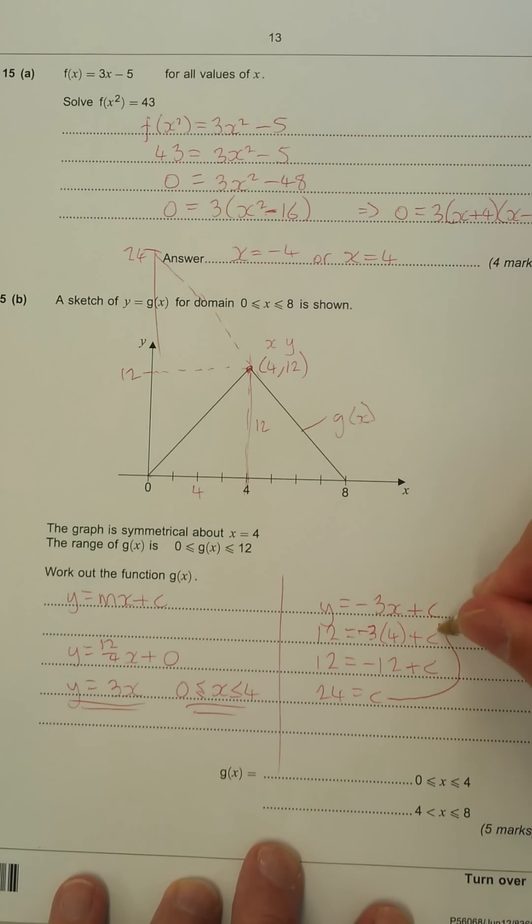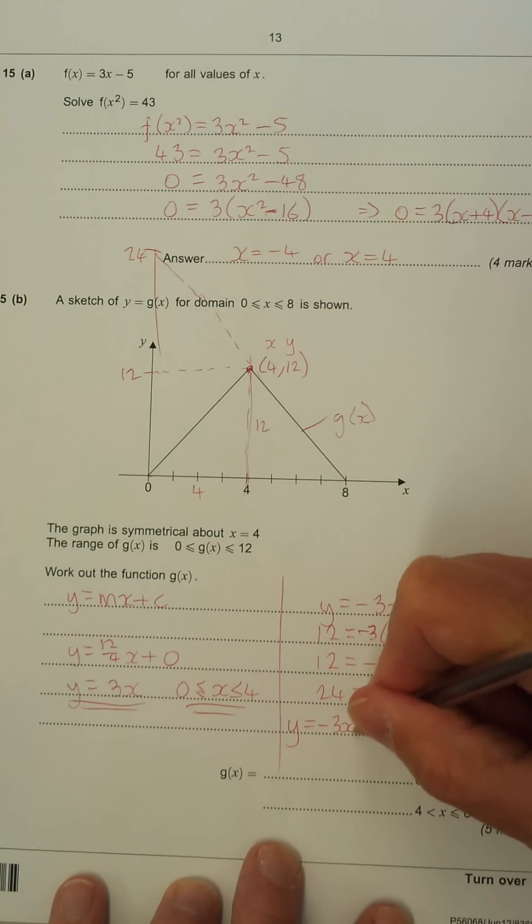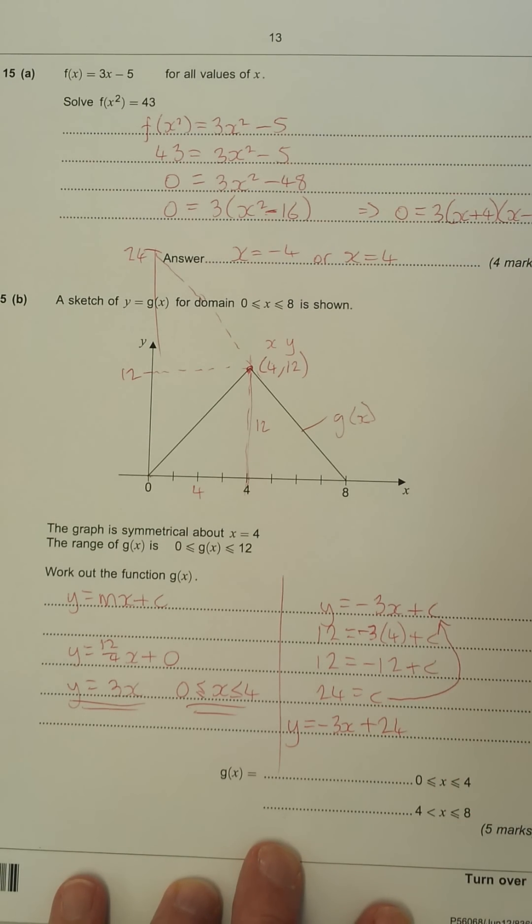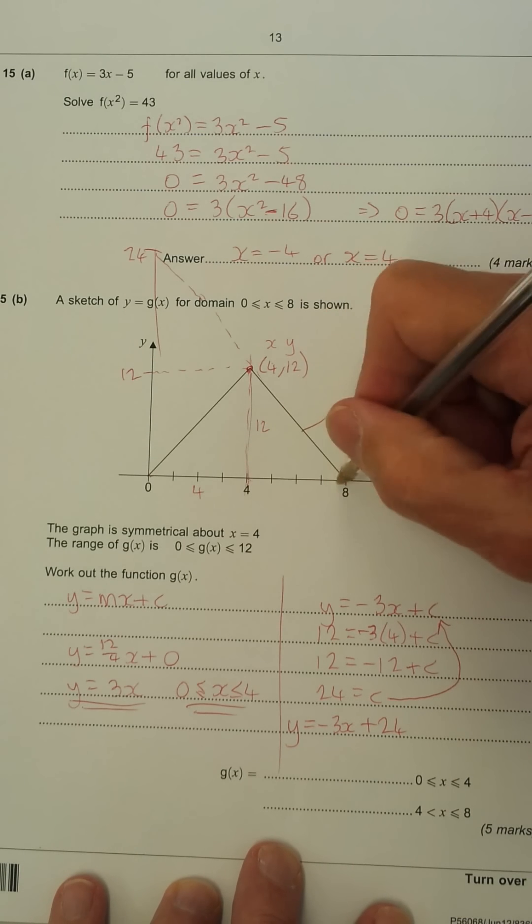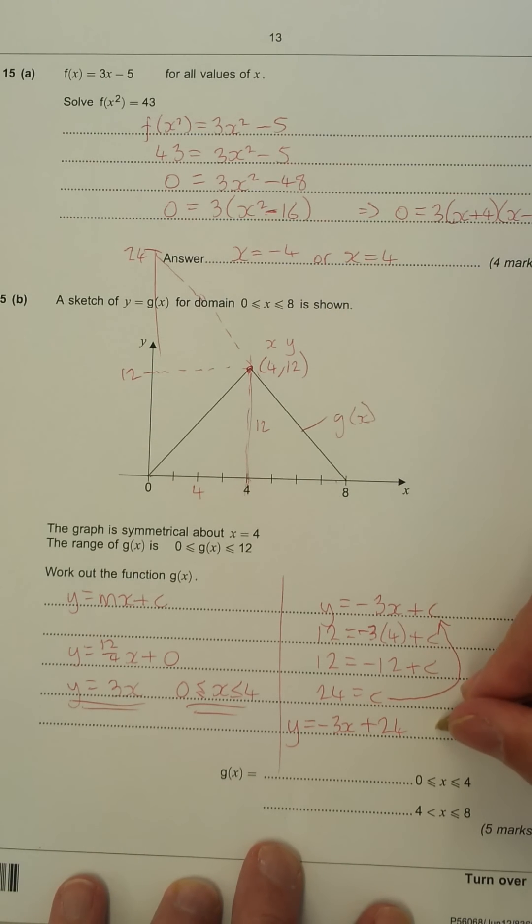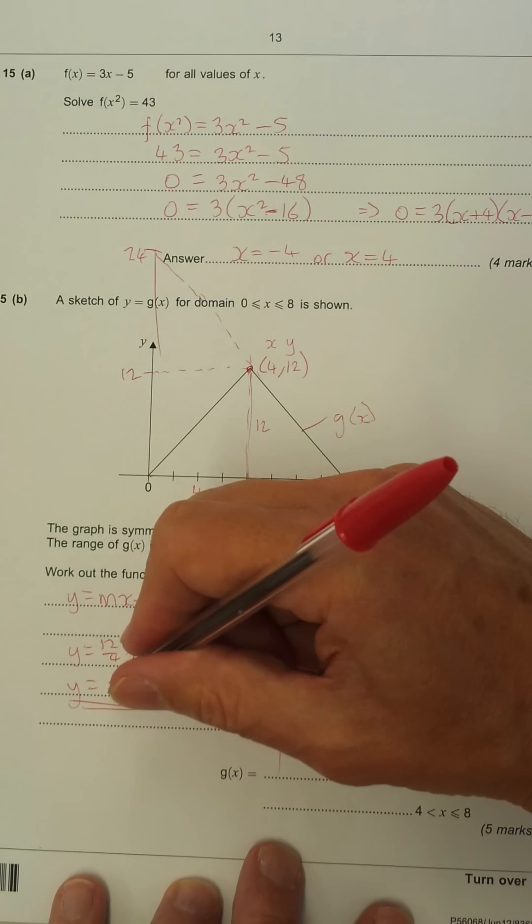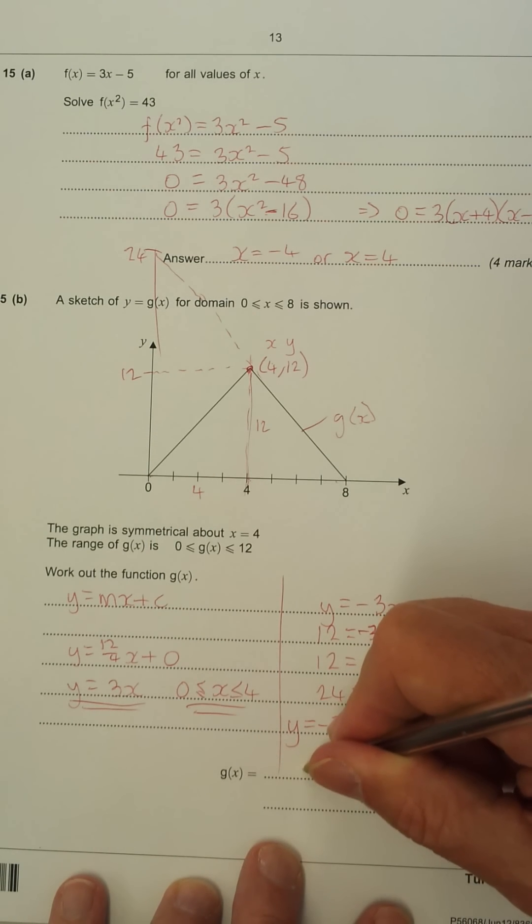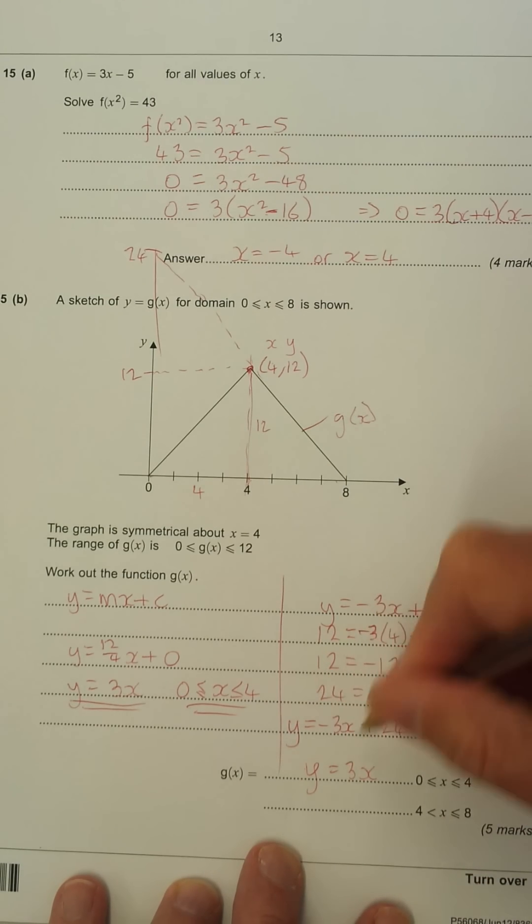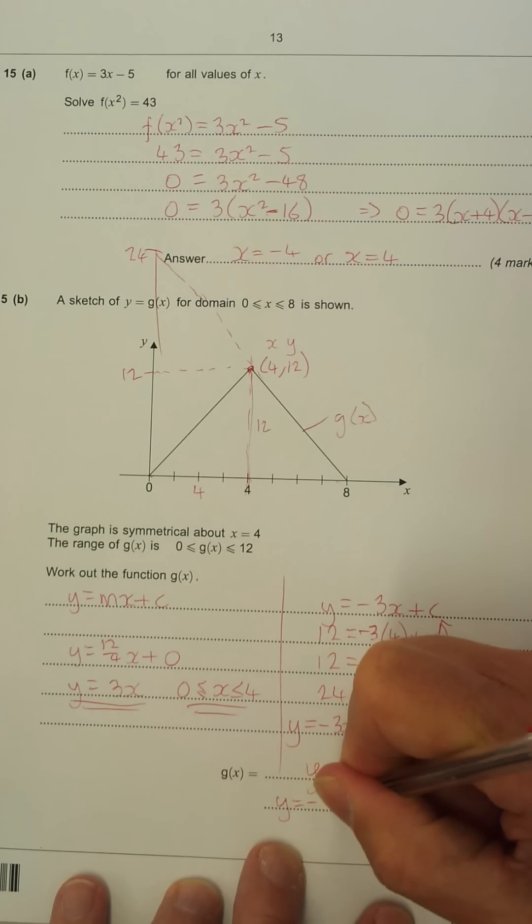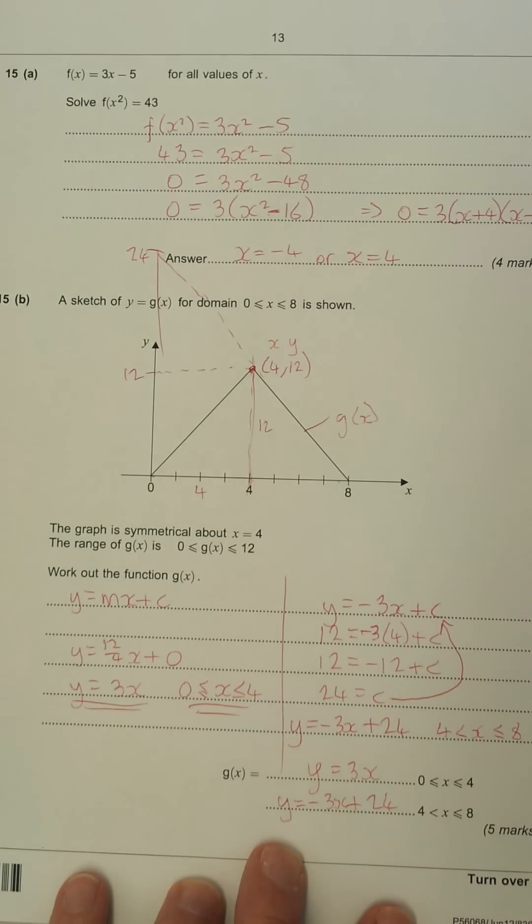Now, what we'll do is substitute it back into here. You get y equals minus 3x plus 24. And the range, you can see, for this one, is 4 to 8. So we've got 4 less than or equal to x less than or equal to 8. All right? Now, all we'll do is put these in the answer mark. So I've got this on the line here. y equals 3x. And this one, y equals negative 3x plus 24. And that's it.